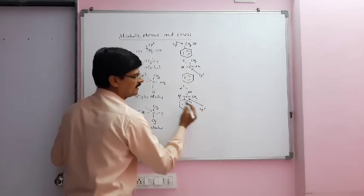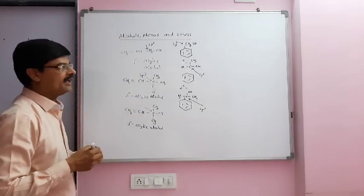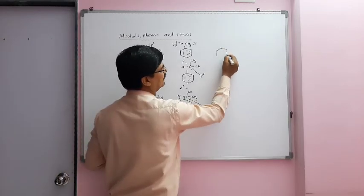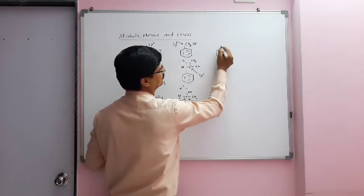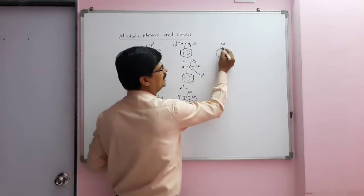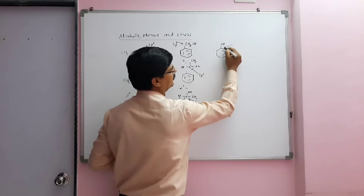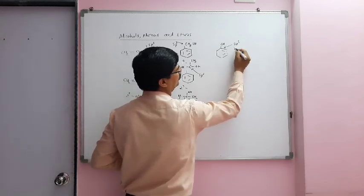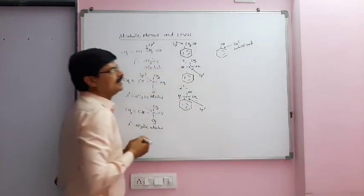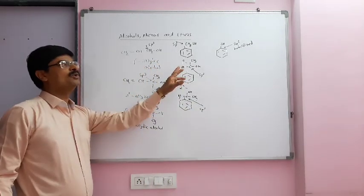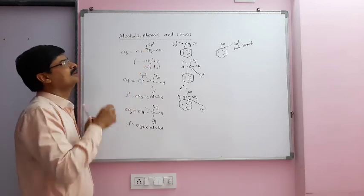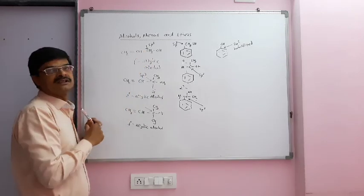Now, SP2 hybridized carbon, we have example of phenol, in which carbon containing OH is SP2 hybridized. Now we will take few nomenclature by which we can understand how names to alcohols are given.